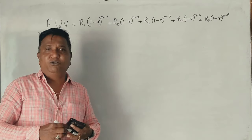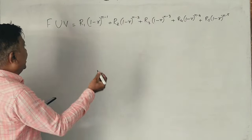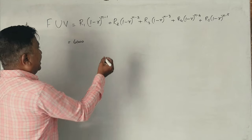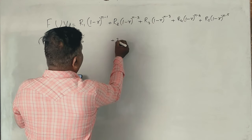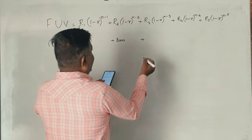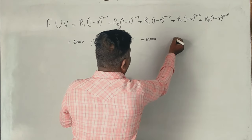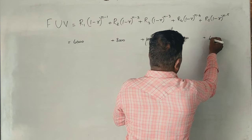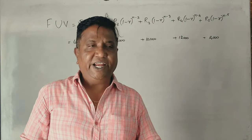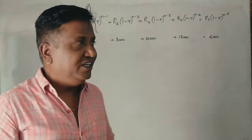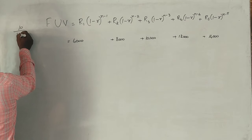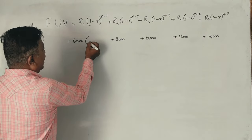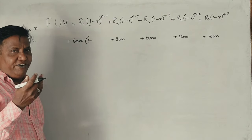Now we substitute values. First year investment is 6,000; second year investment is 8,000; third year investment is 10,000; fourth year investment is 12,000; fifth year investment is 14,000. The rate of interest is 10%, which is 10 divided by 100, equal to 0.10.